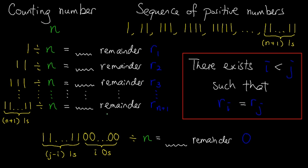And here, we have completed the proof that every counting number n has a positive multiple, whose digits are only 0s and 1s.